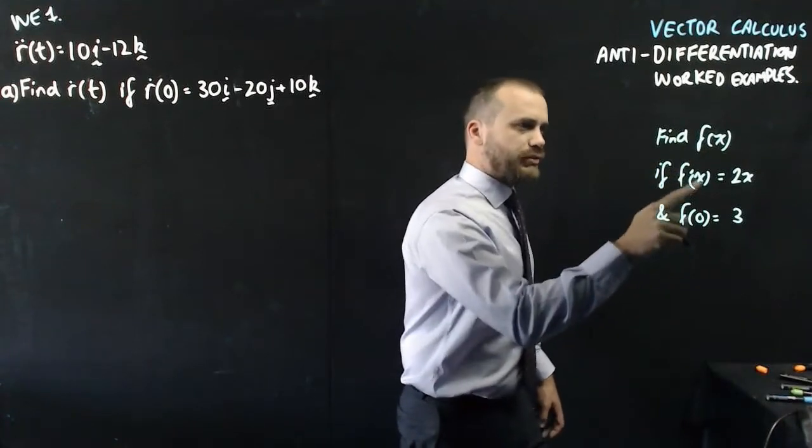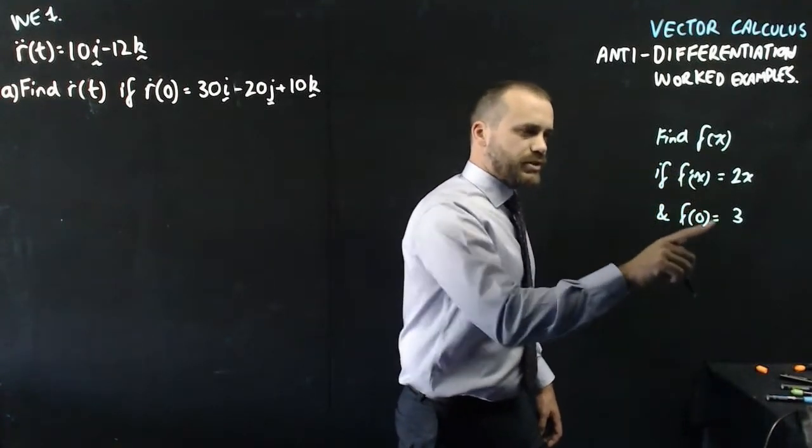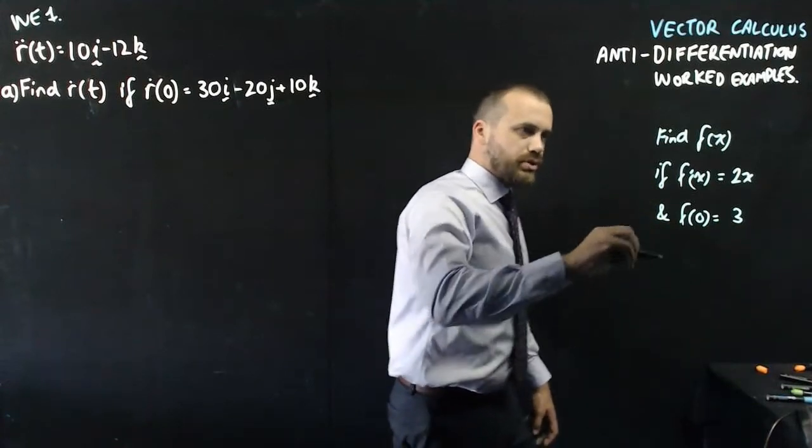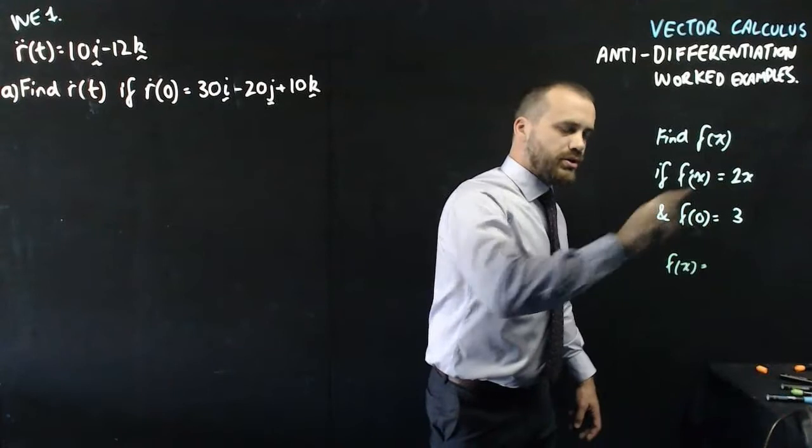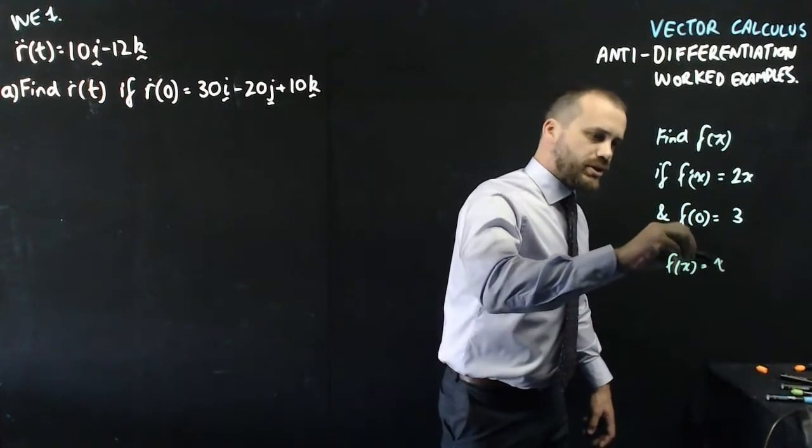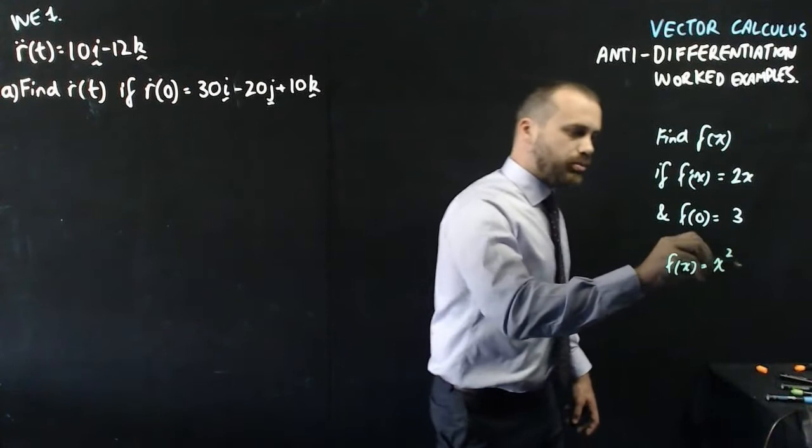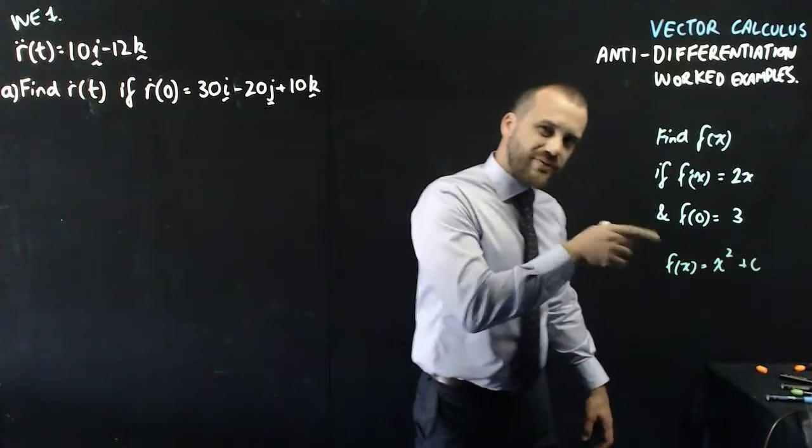Find f of x if f dash of x equals 2x and f of 0 equals 3. So if you wanted to do that you'd say f of x equals the anti-derivative of that which is x squared plus some c value.